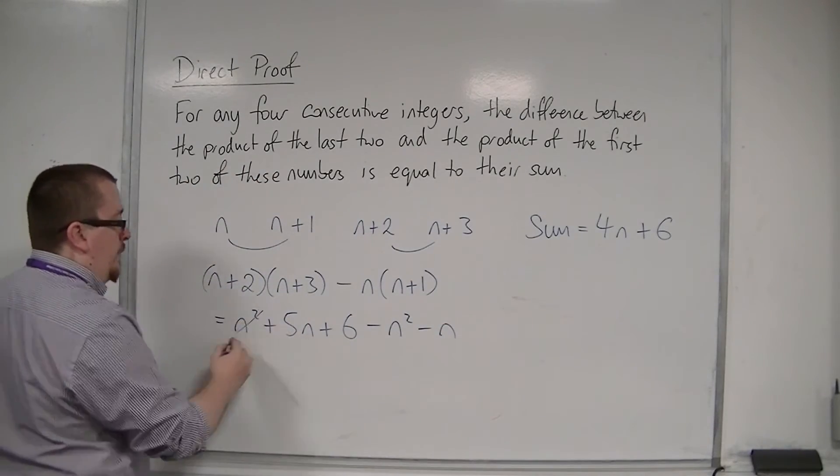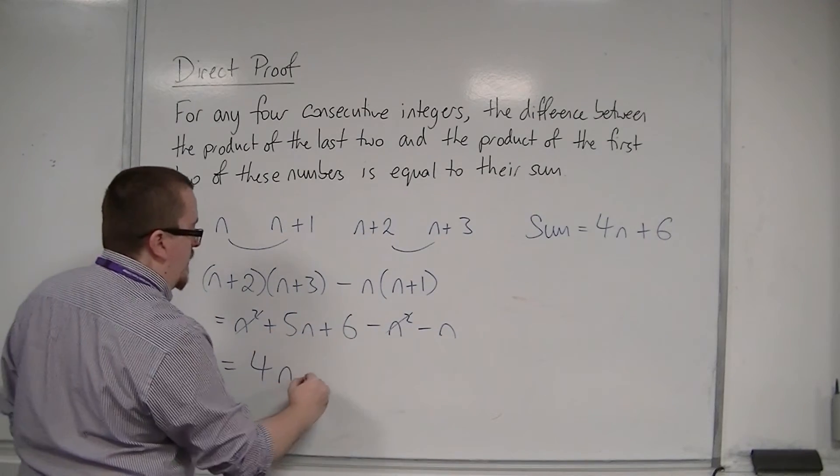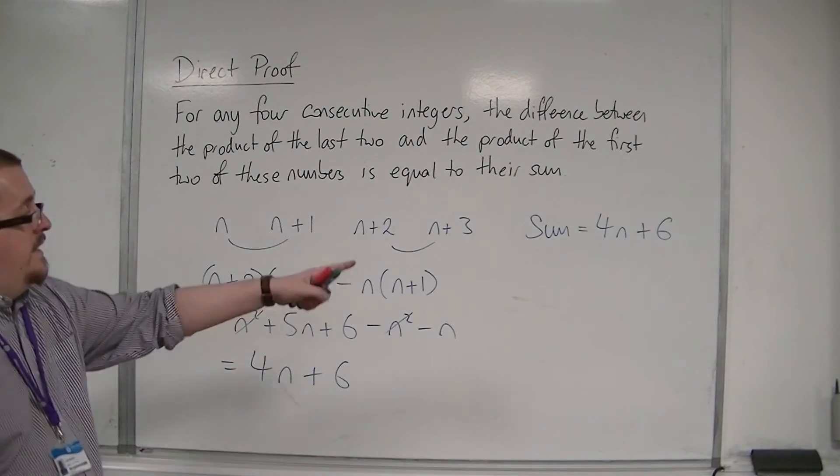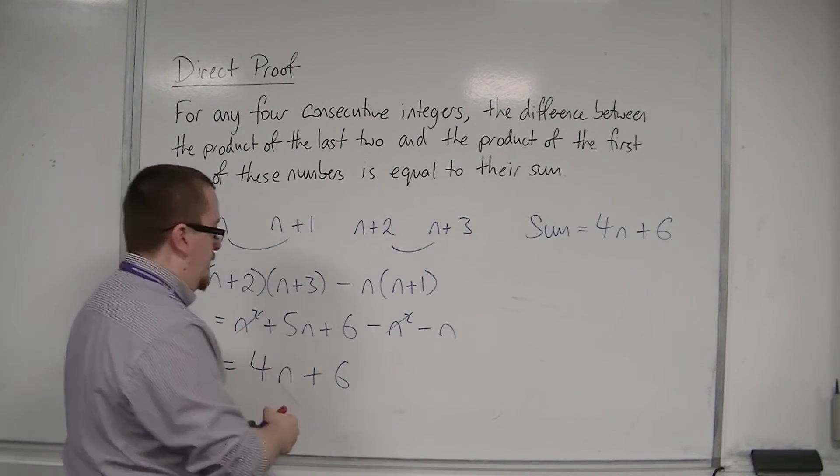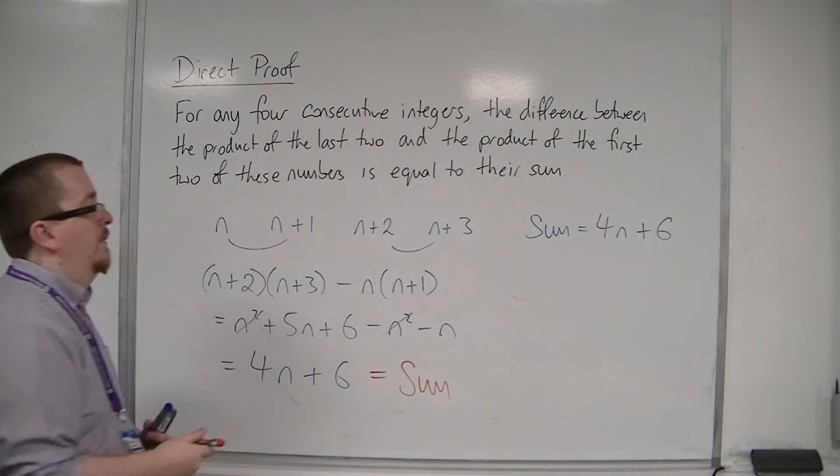So the n squareds cancel, I've got 5n take away n, and that's 4n, plus the remaining 6.